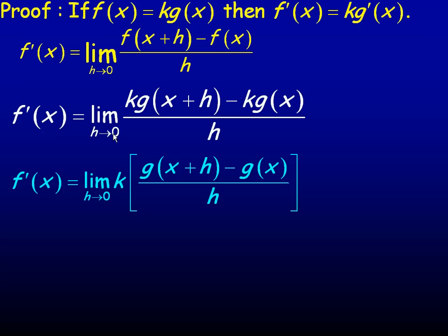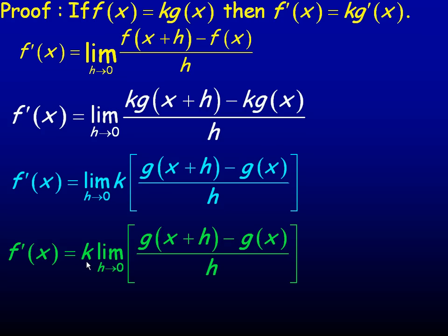And in fact, h is what's tending towards 0. h is completely independent of what k is. It has no bearing on what k is. So not only can k be factored out of this, it can actually be factored completely out of the limit. Now, so we have f'(x) is k times this limit. Now, notice what this limit is.